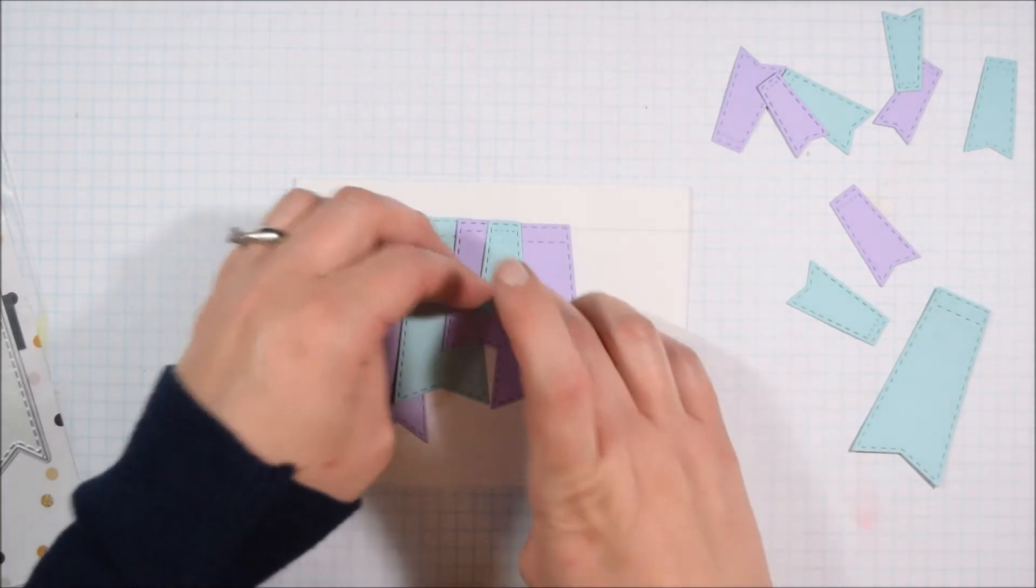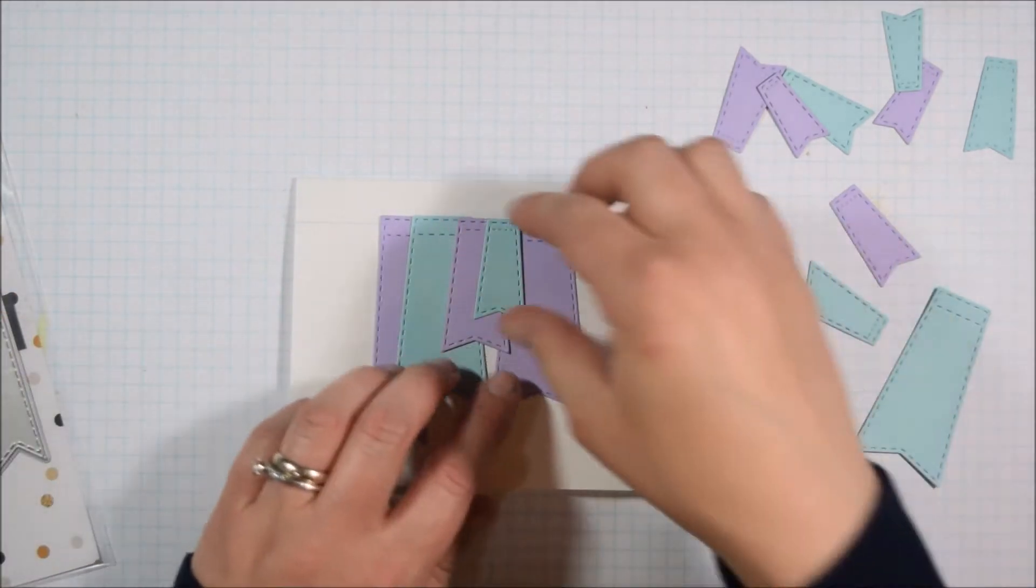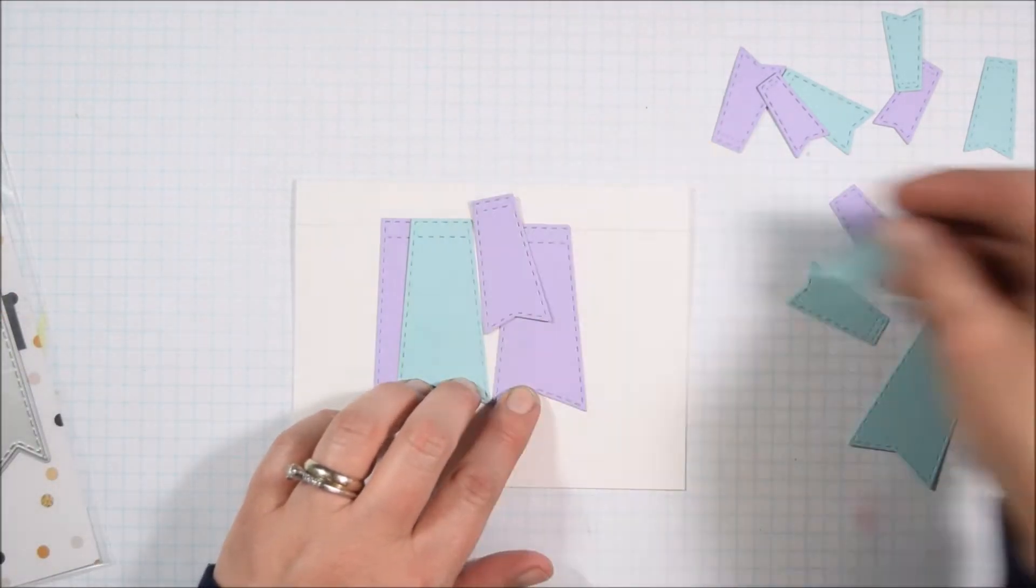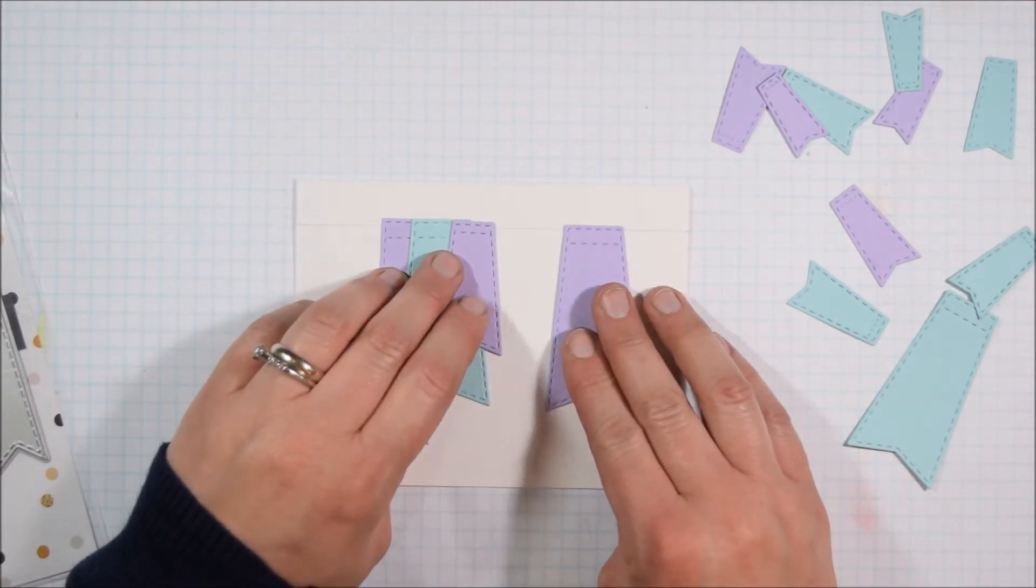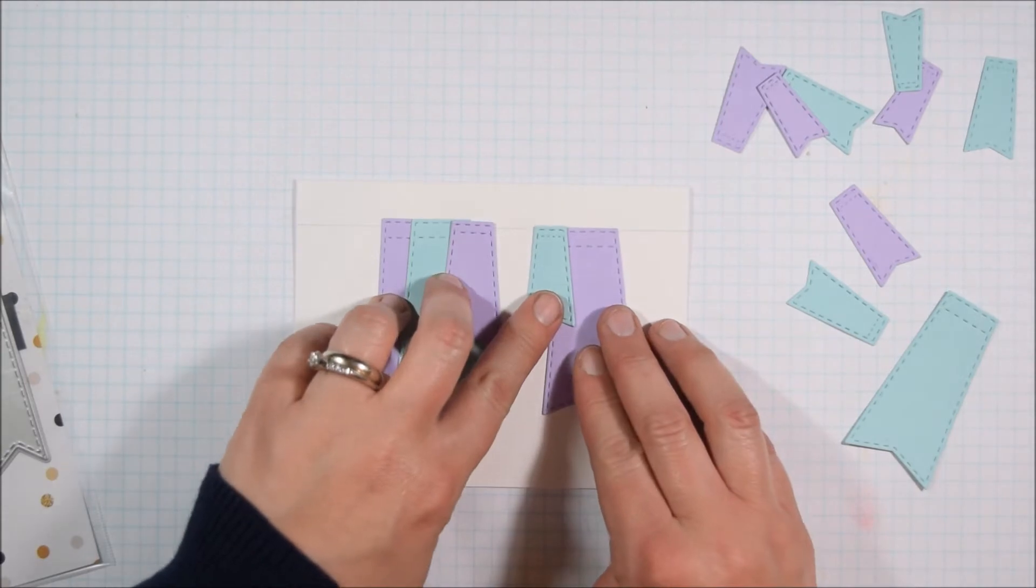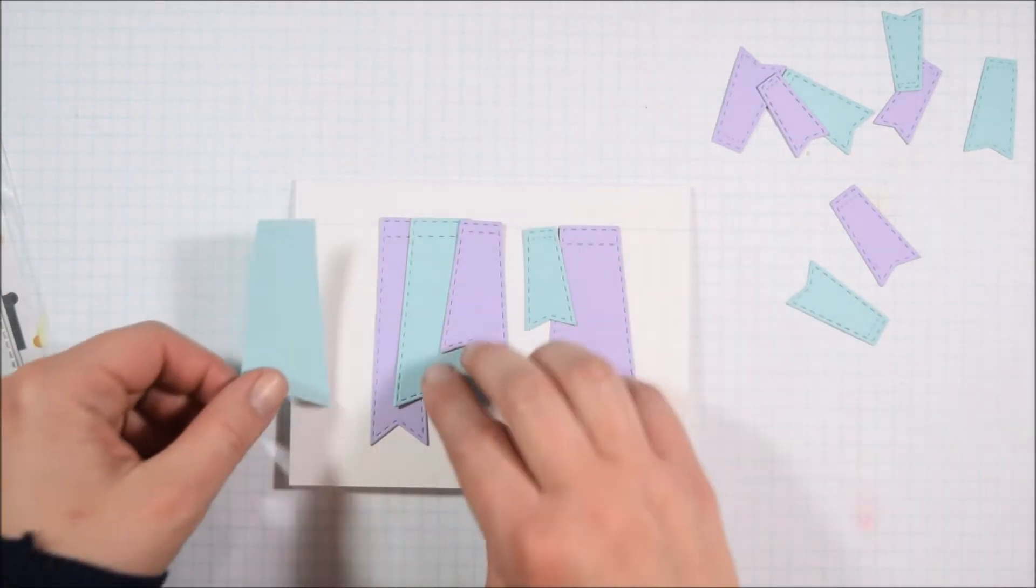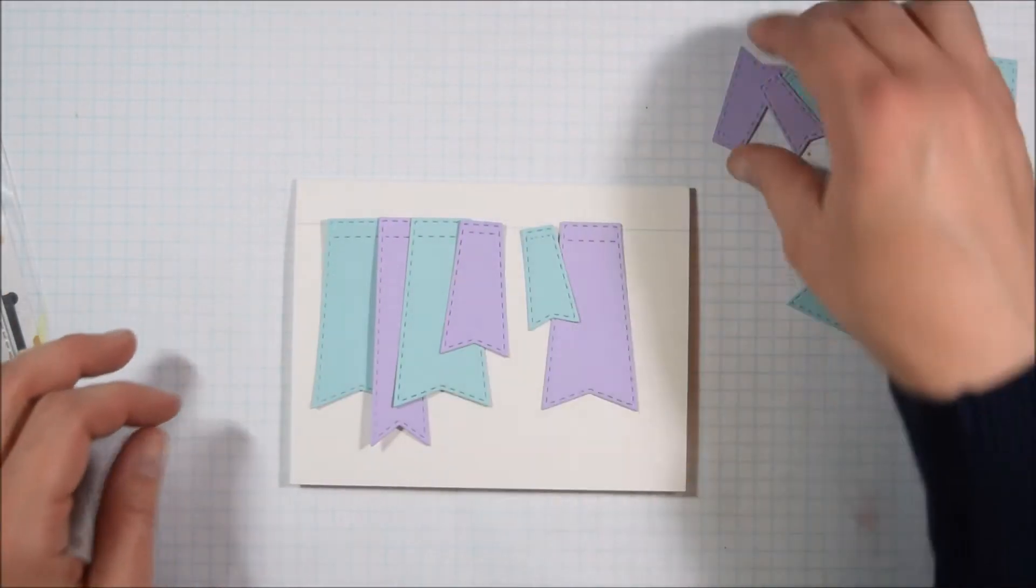Basically I just had scraps of these blues and purples, so I just kind of die cut whatever I could fit and whatever I could use to kind of get rid of that cardstock and use it up. So it left me with a variety of the flag sizes from the set.